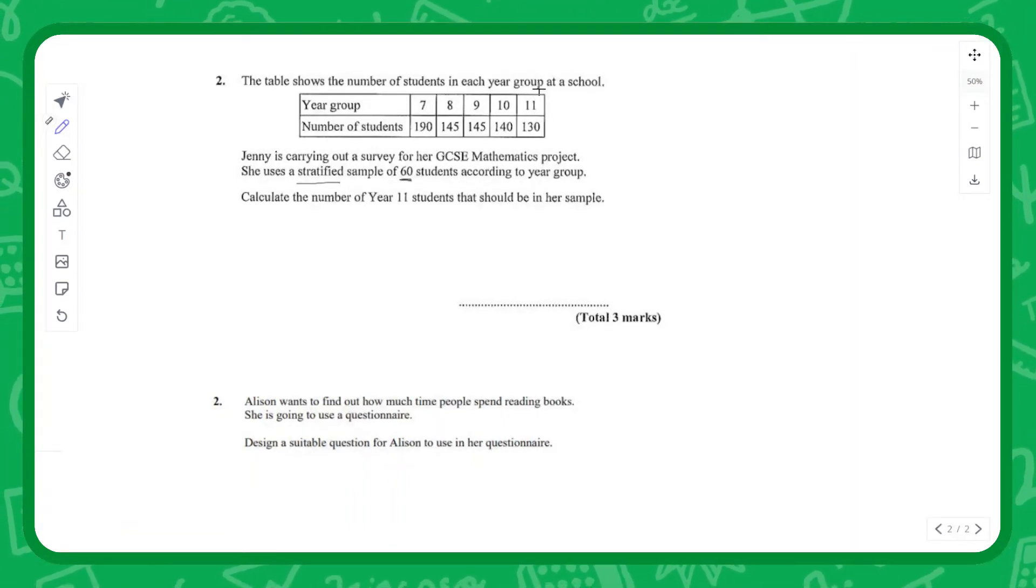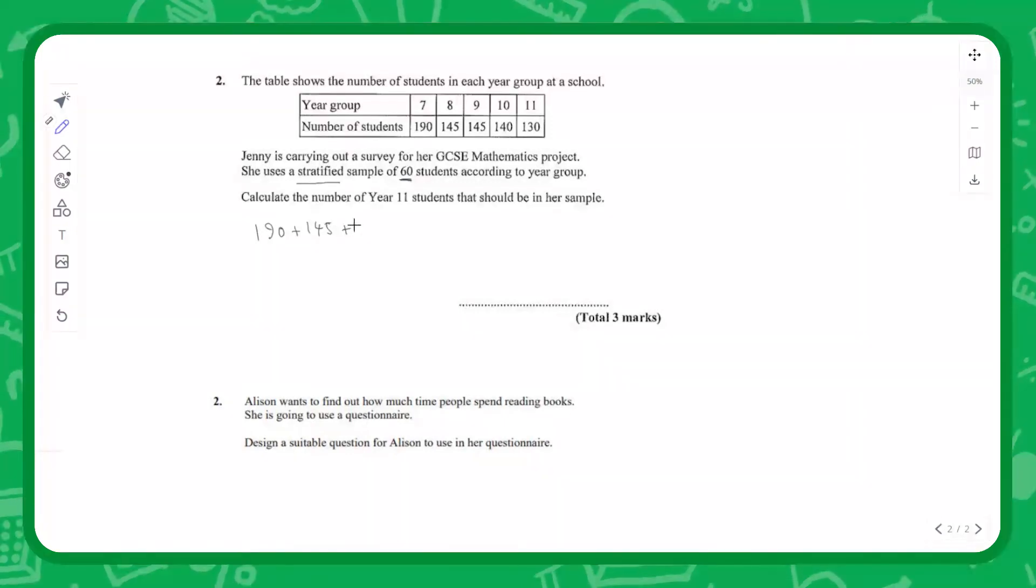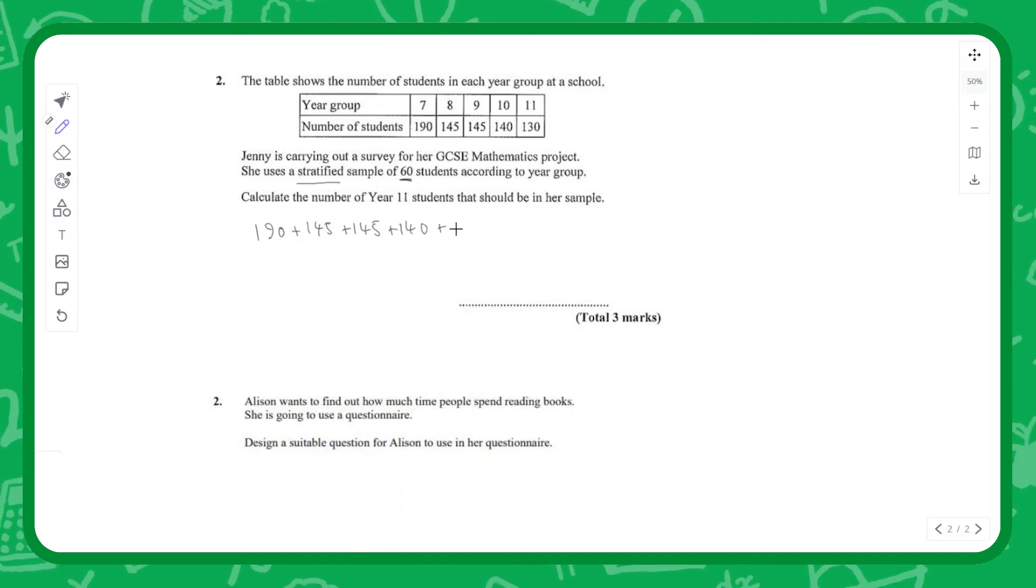We need to work out exactly how many we should pick from year 11 to include in our sample if we're measuring 60 students in total. First we need to know how many students there are in total to know what 130 represents as a fraction of the total. We can do 190 plus 145 plus 145 plus 140 plus 130, and if I mark that...